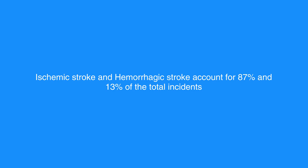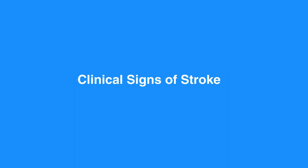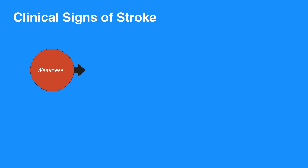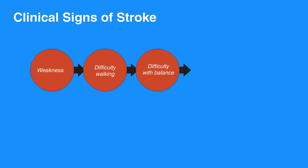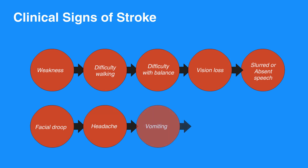In general, the symptoms of ischemic and hemorrhagic strokes are similar; however, the treatments are very different. Clinical signs of stroke depend on the region of the brain affected by decreased or blocked blood flow. Signs and symptoms can include weakness or numbness of the face, arm, or leg, difficulty walking, difficulty with balance, vision loss, slurred or absent speech, facial droop, headache, vomiting, and change in level of consciousness. Not all of these symptoms are present, and the exam findings depend on the cerebral artery affected.